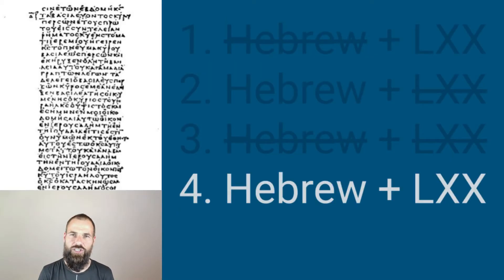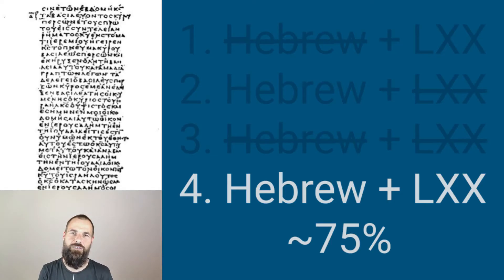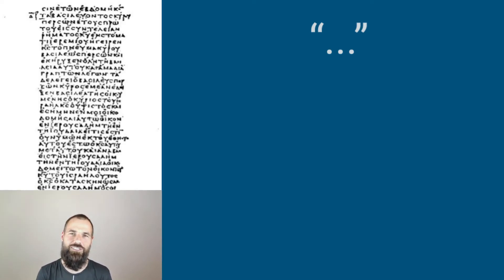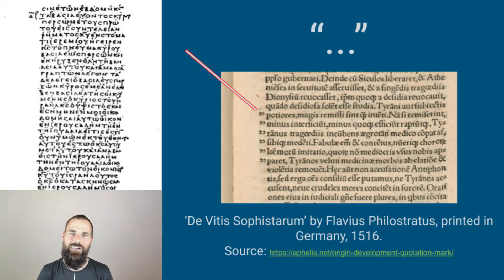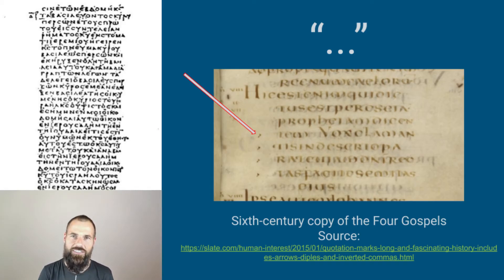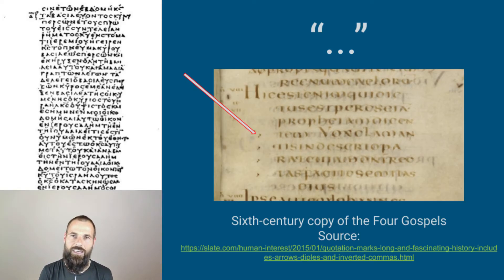The last category of quotations are those where the Hebrew text matches the Septuagint, and the New Testament matches both of them. Good news — this is actually a good chunk of the quotations: around 75% of all New Testament quotations of the Old Testament actually match both the Septuagint and the Hebrew text. One additional background point: quotation marks as we know them are a fairly recent invention, coming from roughly the 16th century. Certain ways to mark quotations did exist in more ancient manuscripts, but the New Testament writers did not seem to use them.